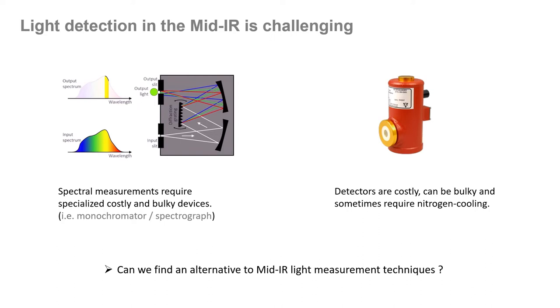Moreover, the optical power detectors needed to measure tiny variations are also costly and sometimes even require nitrogen cooling, which can be an obstacle for field deployment. Therefore, the question becomes, can we find an alternative to mid-infrared light measurement techniques?